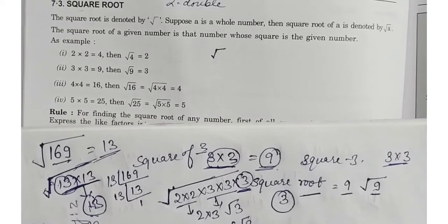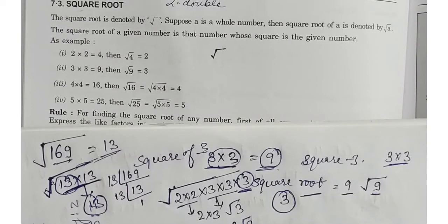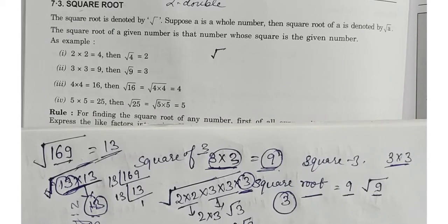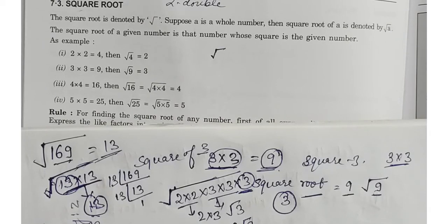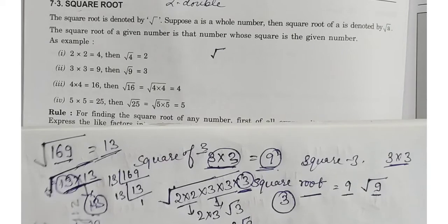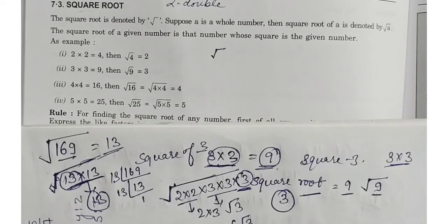اس چیز کو دھیان رکھیں گے — اگر آپ کے پاس کوئی بڑے number کا square root ہوتا ہے، تو آپ اس کا factor find کر لیں گے. اس کے factors کو آپ 2-2 کا pair بنا دیں گے — equal numbers کا pair بنا کر کے آپ root کو ہٹا سکتے ہیں. That is a very easy way you can apply and you can find the square and square root of different numbers.